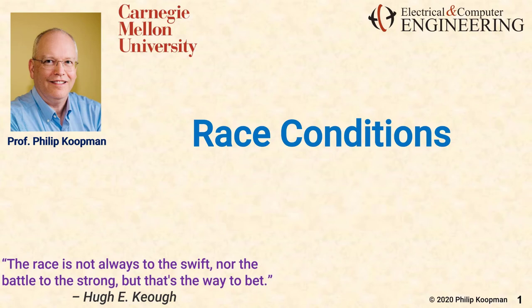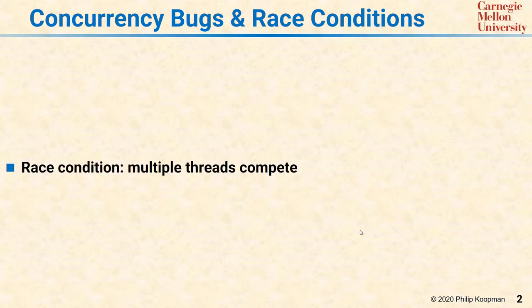This is Phil Koopman with a tutorial on concurrency bugs and race conditions. Concurrency bugs, often called race conditions, involve multiple threads of control competing for some shared resource on your system.